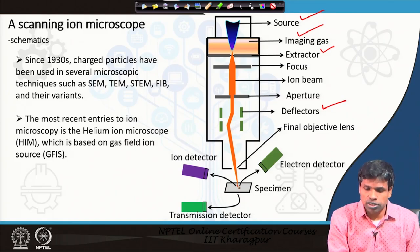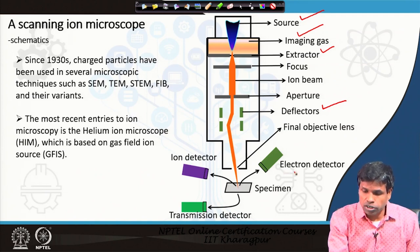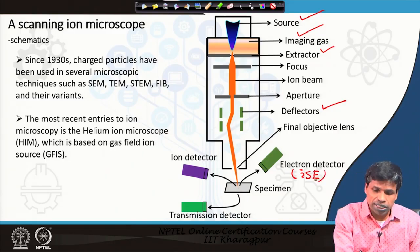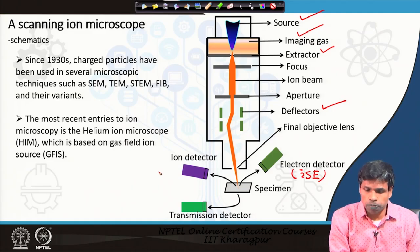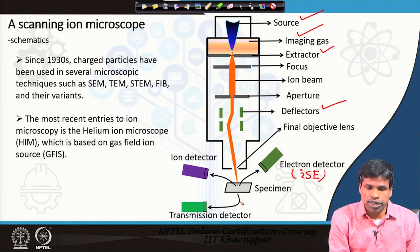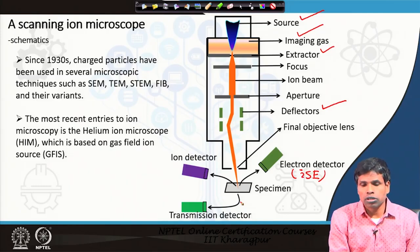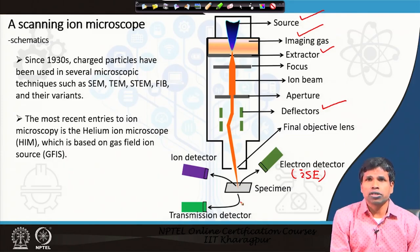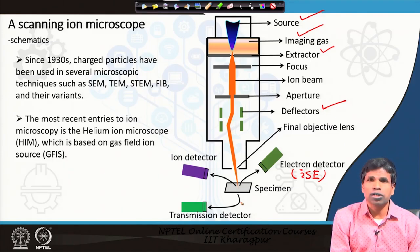Once the ion beam is incident on the specimen, we have an electron detector — that is the secondary electron detector — and we have a backscattered ion detector. We can also have a transmission detector, which we may discuss later. This is the typical schematic of the helium ion microscope. Ions have been used in microscopy for a long time for different purposes.